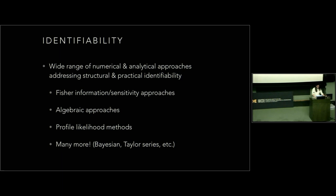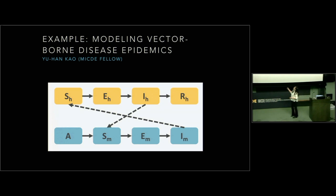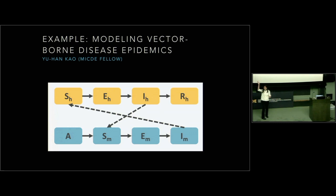Before getting into methods, I want to give a simple example from Yuan Kao's PhD dissertation — she was a MICDE fellow. She was looking at dengue, a mosquito-borne disease, in Taiwan. We used one of the most commonly used mosquito-borne disease models, used for dengue, Zika, by the CDC, WHO, and many others for forecasting. The model tracks humans progressing from susceptible through exposed and infectious states, and mosquitoes from an aquatic stage through susceptible and infected stages — implemented as ODEs or in a stochastic setting.